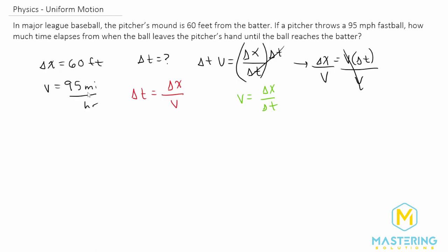For this, I'm going to change the 95 miles per hour into feet per second. So we have 95 miles per hour. We want the miles to cancel and we're going to go straight into feet, which is 5,280 feet in one mile.